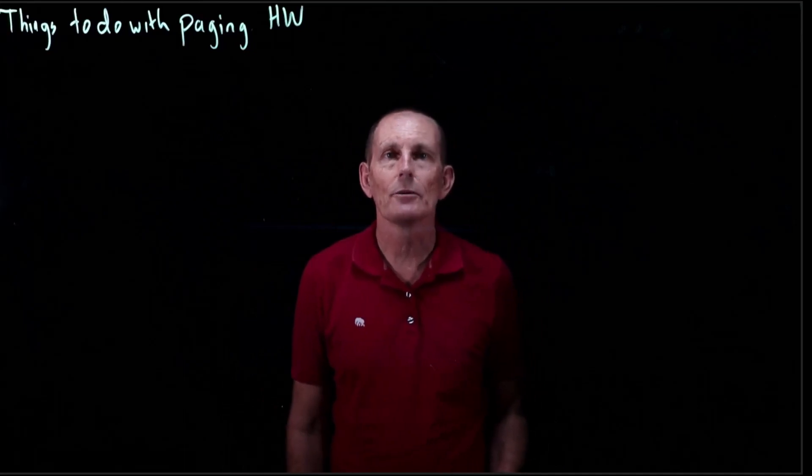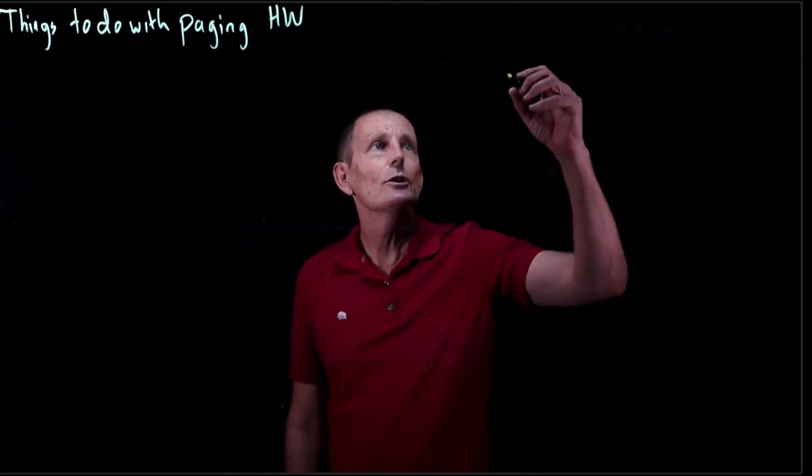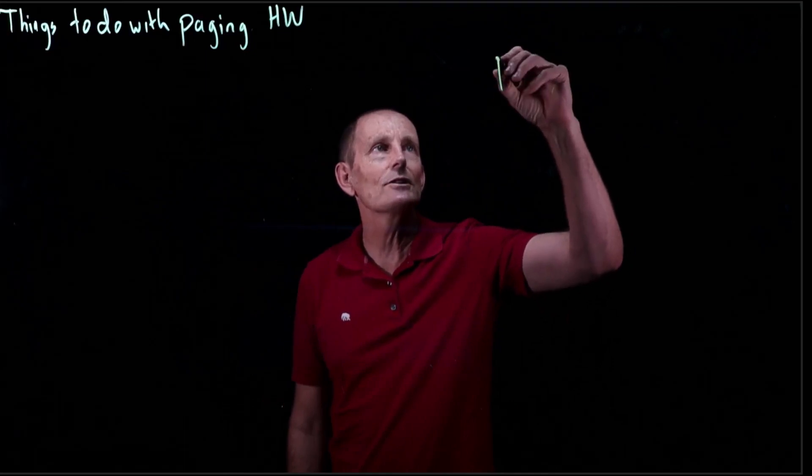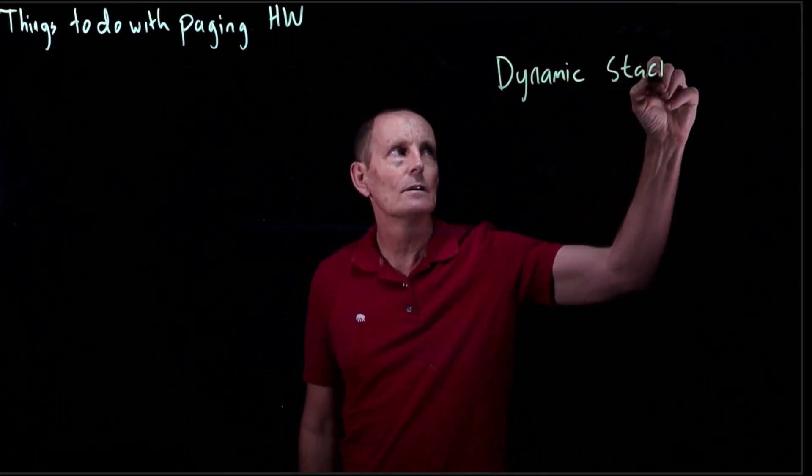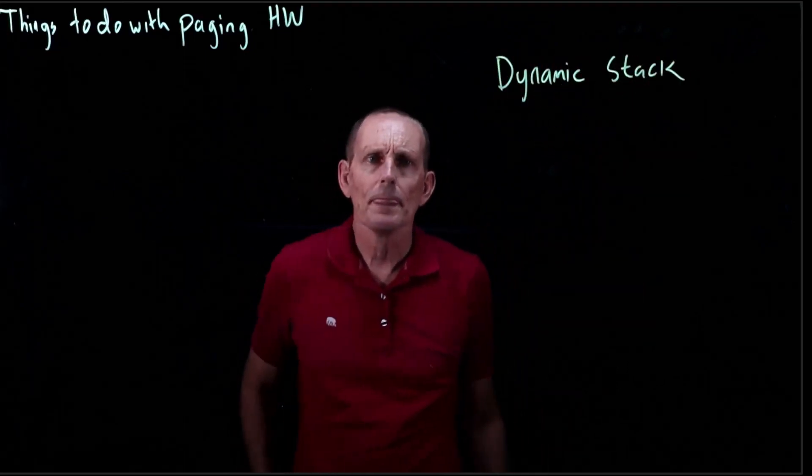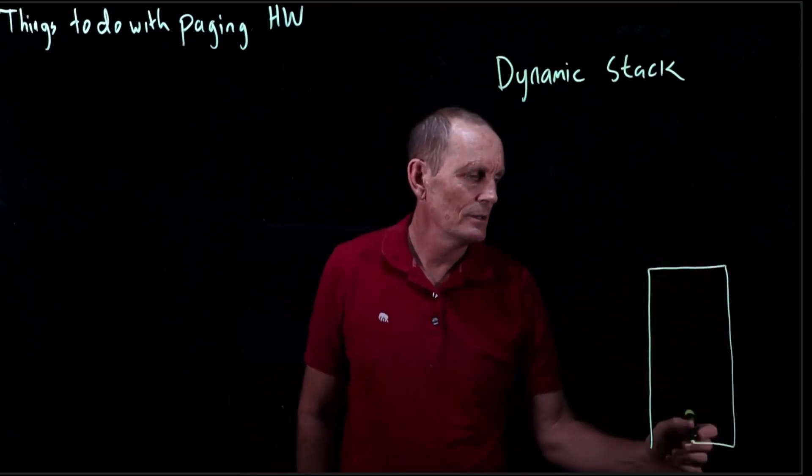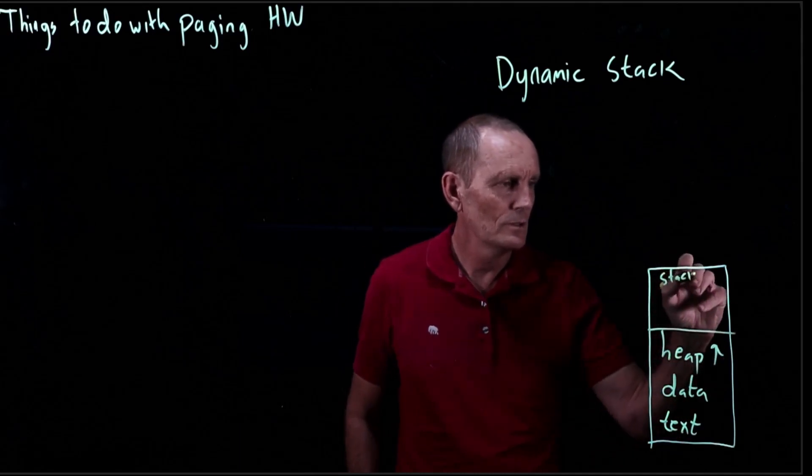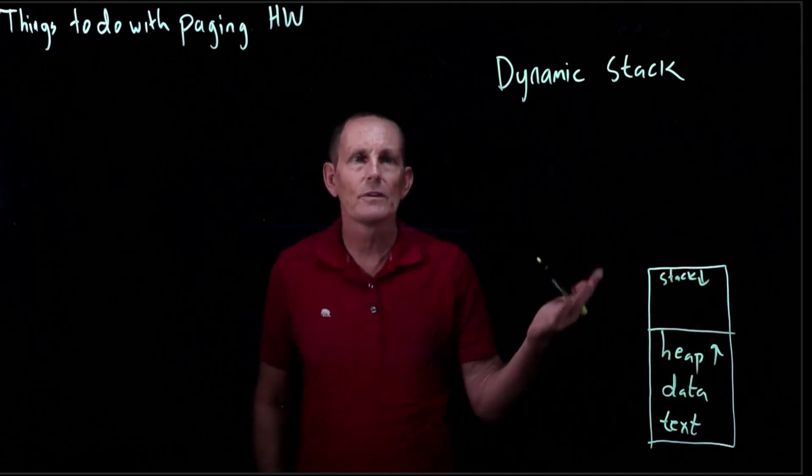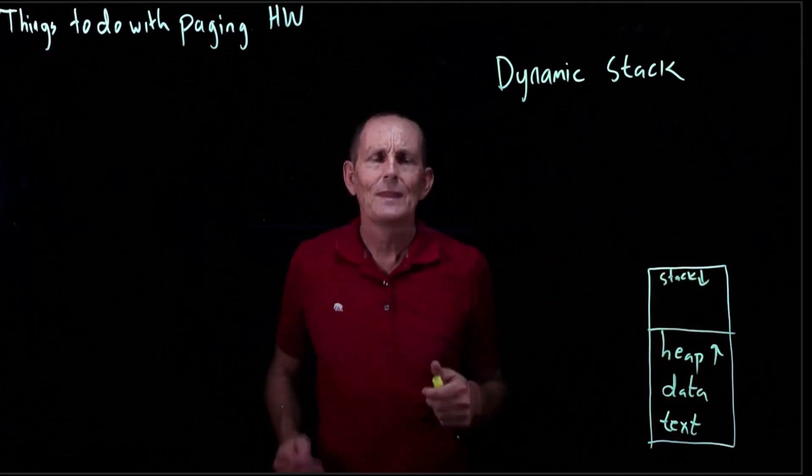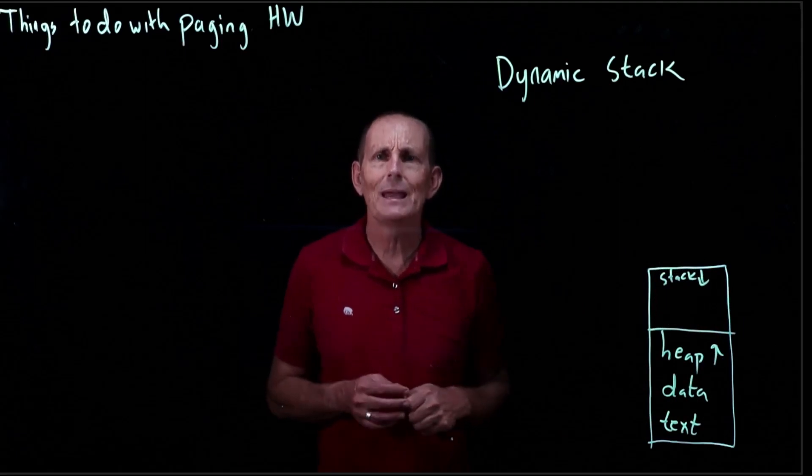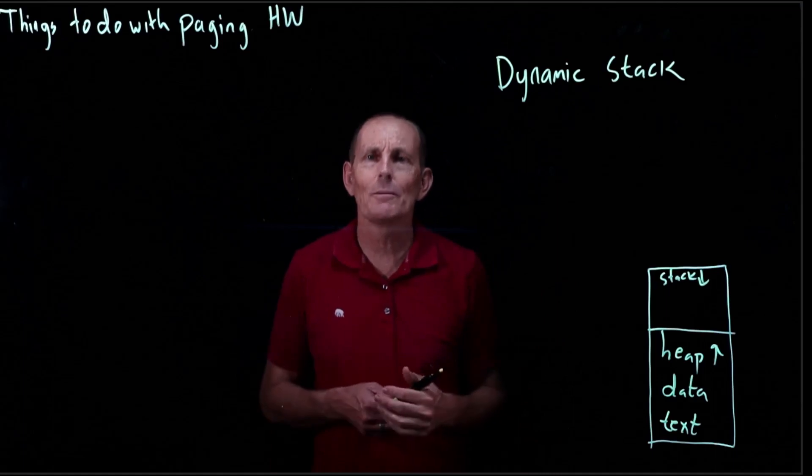Another optimization that we can do with paging hardware is to dynamically allocate stack pages. So let's say we've got our process, we've got our heap growing up, we've got our stack growing down. How many pages should we allocate for the stack? When we start a process, how big should we make that stack?